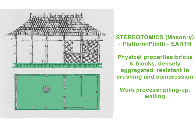Now let's look at the stereotomic element. In Semper's system, any platform, plinth, or podium is a stereotomic element. You can just make out in the drawing that the hut sits on a raised platform, colored green. Masonry involves working with strong, densely aggregated materials that resist crushing and compression. The most common material is stone; the mason works the material into regular, systematic pieces that can be piled up on top of one another.